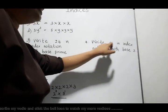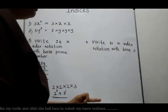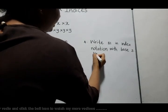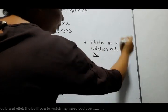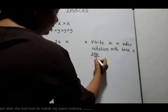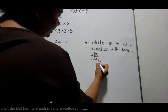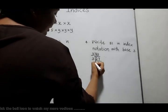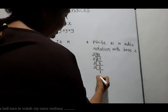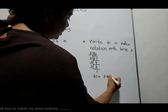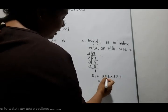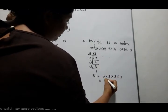Let's see another one: write 81 in index notation with base 3. Here the base is given as 3, so we divide only by 3. 81 ÷ 3 = 27, 27 ÷ 3 = 9, 9 ÷ 3 = 3, 3 ÷ 3 = 1. So we can write 81 as 3 into 3 into 3 into 3. There are four 3's, so the answer is 3 to the power 4.